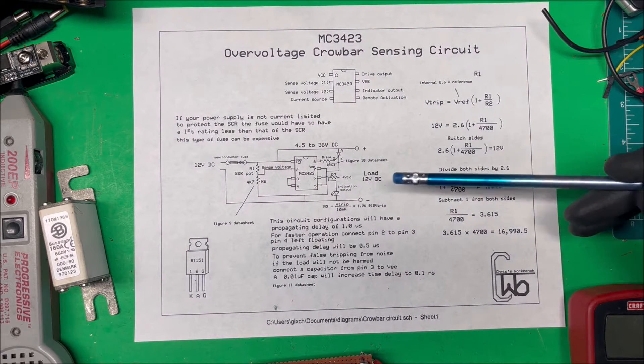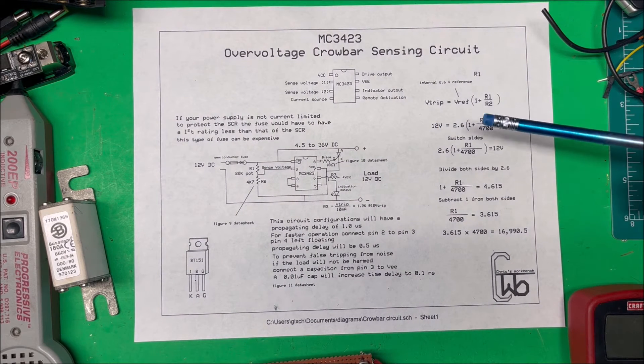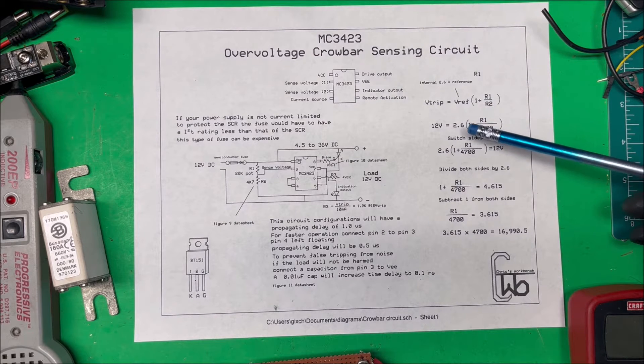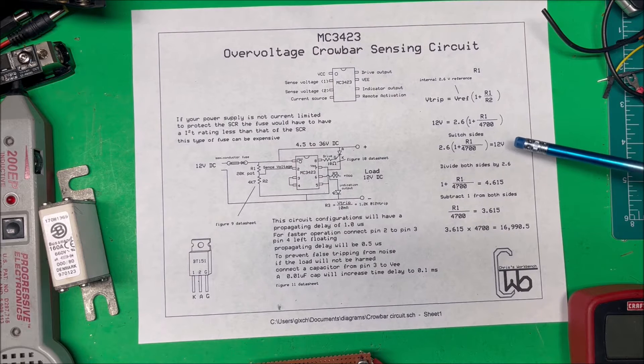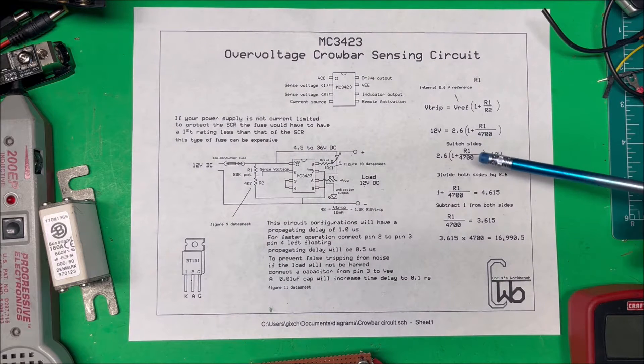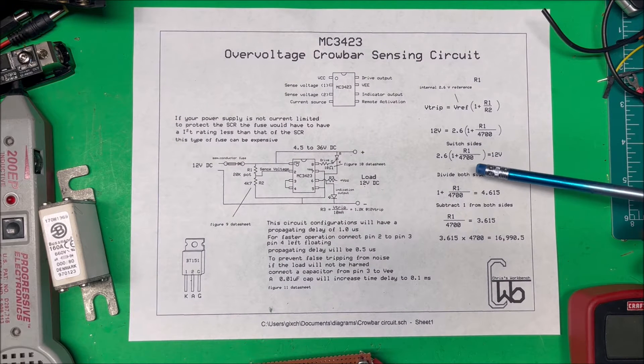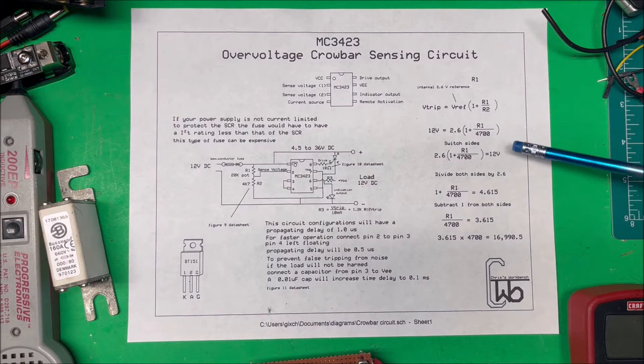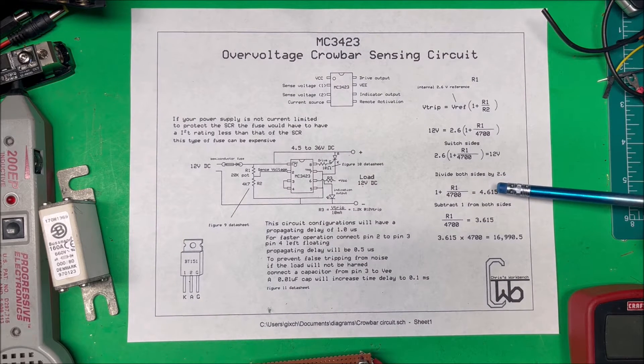We know our V ref is 2.6 and we're going to use a trip voltage of 12 volts, so this will shut off at 12 volts. To calculate R1, I switched sides and put the 12 volts over here to make it easier, then divide both sides by 2.6. So 2.6 into 12 goes 4.615.